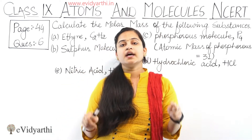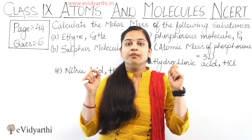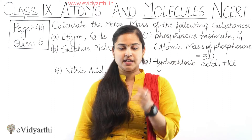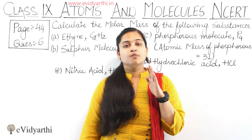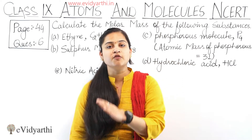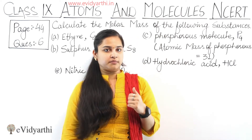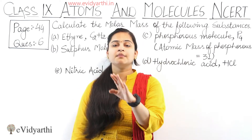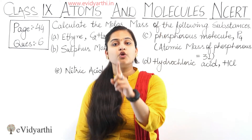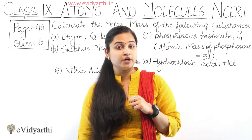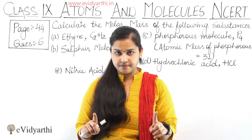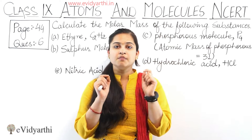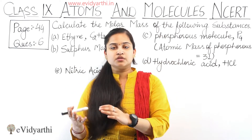Molecular mass is the mass of one molecule of that kind. For example, the molecular mass of calcium hydroxide Ca(OH)₂ is equal to 74 amu. Molar mass is the mass of 1 mole of molecules of that element. For example, the molar mass of hydrogen is 1 gram, meaning 1 mole of hydrogen is approximately equal to 1 gram.